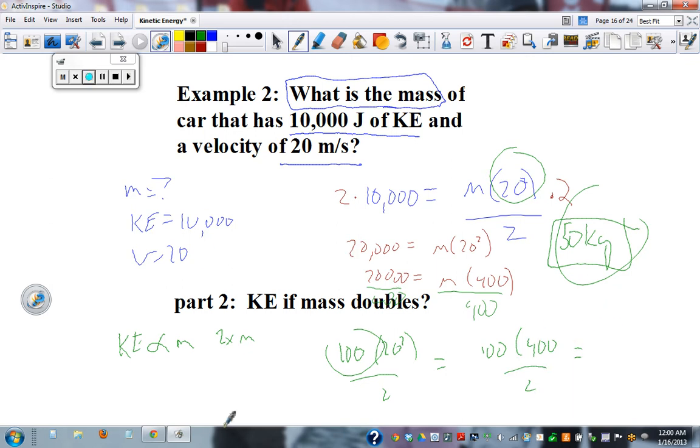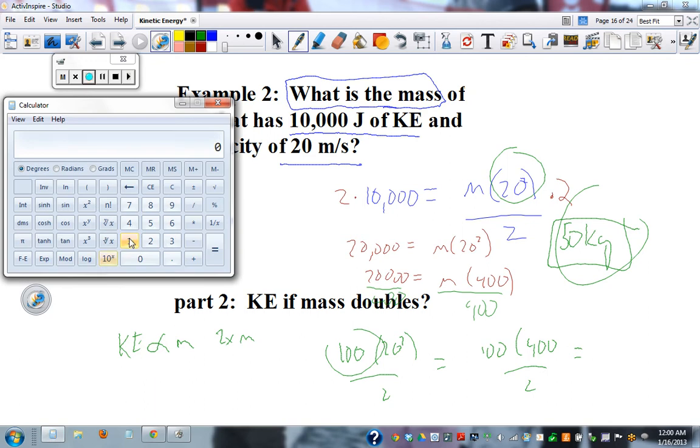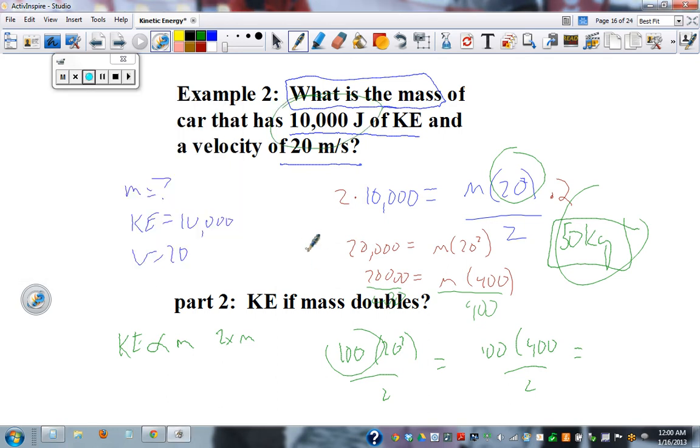What's 100 times 400? 100 times 400 equals 40,000 divided by 2 equals 20,000. So we doubled our original kinetic energy. So it's true. If you double the mass, you have twice as much kinetic energy.